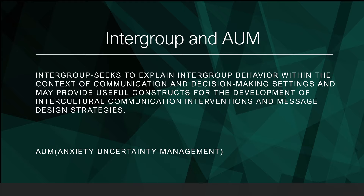Intergroup Theory seeks to explain intergroup behavior within the context of communication and decision-making settings, and may provide useful constructs for developing intercultural communication interventions and message design strategies. The Anxiety Uncertainty Management (AUM) Theory assumes that at least one person in an intercultural or group encounter is a stranger. This theory explains how intergroup communication effectiveness may be enhanced by the mindful management of anxiety and uncertainty levels, and also explores the roles of motivation, knowledge, skills, and cultural differences in effective communication.